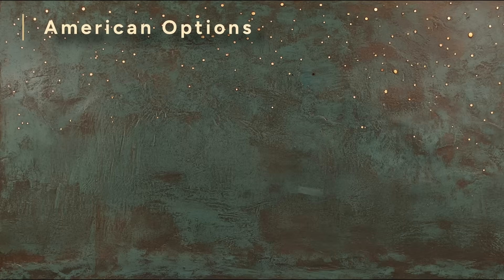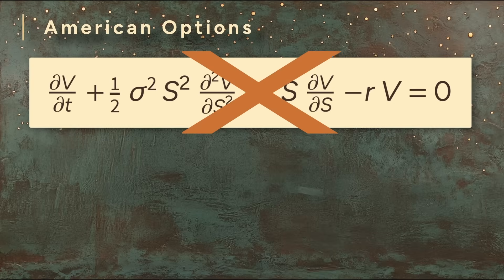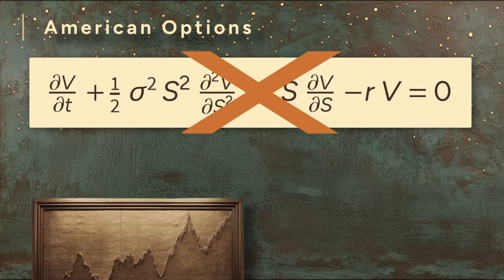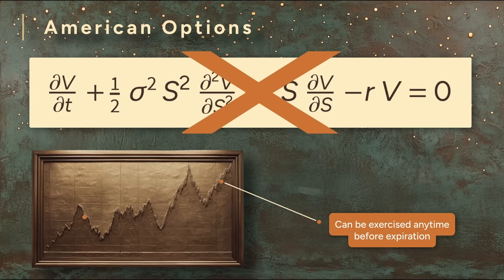What about American options? Their prices cannot be calculated with the Black-Scholes formula because of one key difference from European options. American options can be exercised at any time before expiration. That flexibility makes them more valuable and more complex to price.